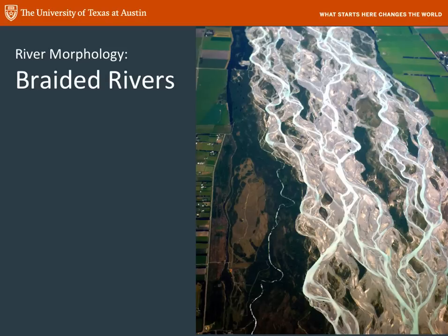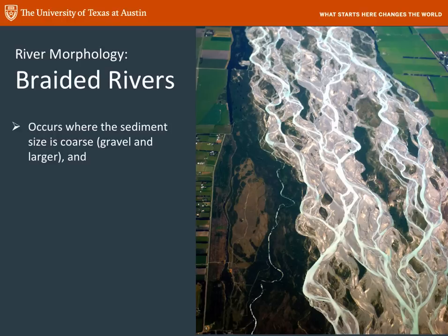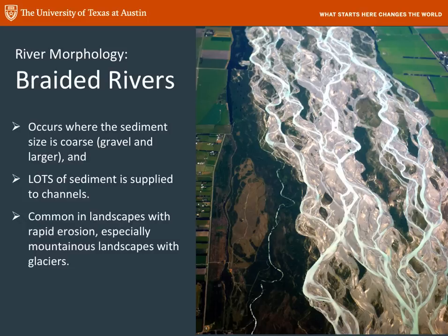Type number one are braided rivers. A braided river tends to be very wide with multiple channels. This occurs where there's a lot of sediment being transported and that sediment is relatively coarse — sand, gravel, and larger. It is an area of very high erosion, common in landscapes near mountains, especially with glaciers, where you have heavy runoff, a lot of water, and a lot of sediment being moved by that water.